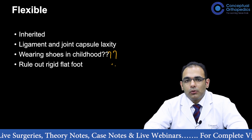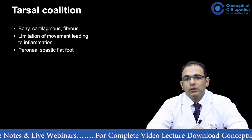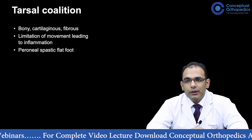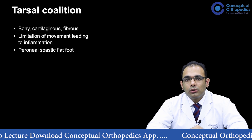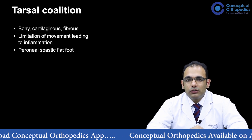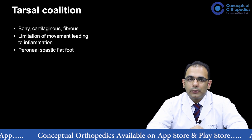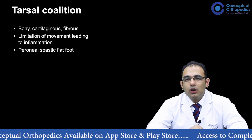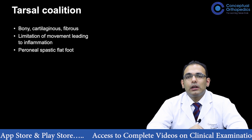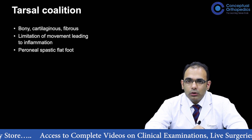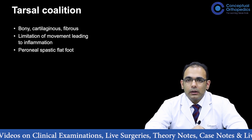When we talk about rigid flat foot, we are talking about tarsal coalition. Tarsal coalition is the failure of segmentation of two tarsal bones during birth. It can be a bony coalition, cartilaginous coalition, or fibrous coalition, depending on the type of union. In tarsal coalition there is limitation of movement, which leads to inflammation — that can be the triggering event causing pain. It is also termed peroneal spastic flat foot because of the inflammation that occurs on the lateral aspect of the foot involving the peroneal tendons.